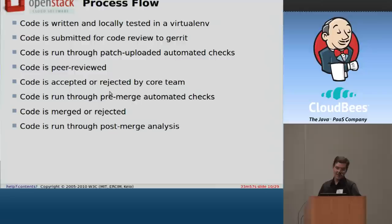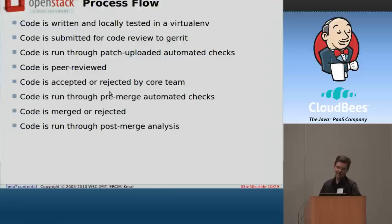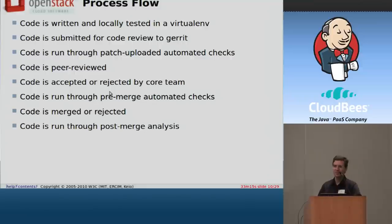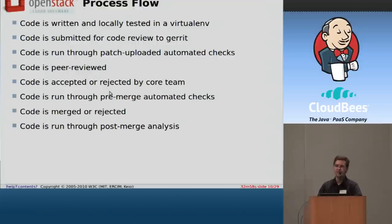They submit the code review to Gerrit, where Jenkins is going to run a complete unit test suite on it. Then the core reviewers of the project look at it and decide whether you can program or not. Assuming Jenkins is happy with it and the core reviewers like it, the core reviewers approve it. Then we run it through tests again — this time in a serialized manner where only if the tests pass does the code merge. So the workflow is: write some code, push it up, it gets approved, and if it passes tests after approval, it gets merged.